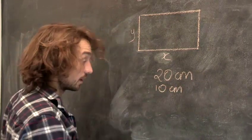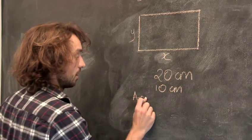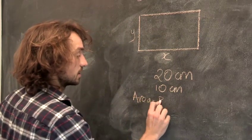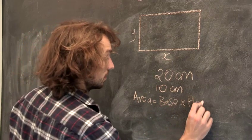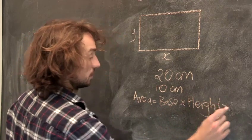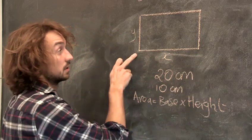To find the area, you multiply: area equals the base times the height. That's the base, and that's the height.